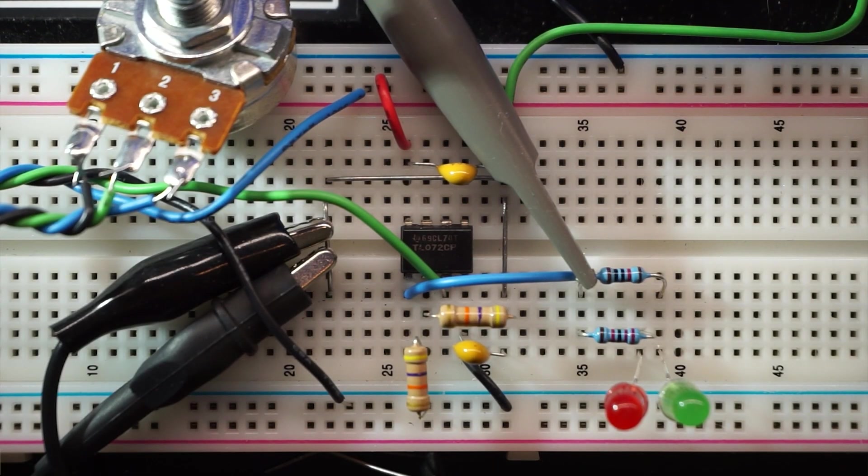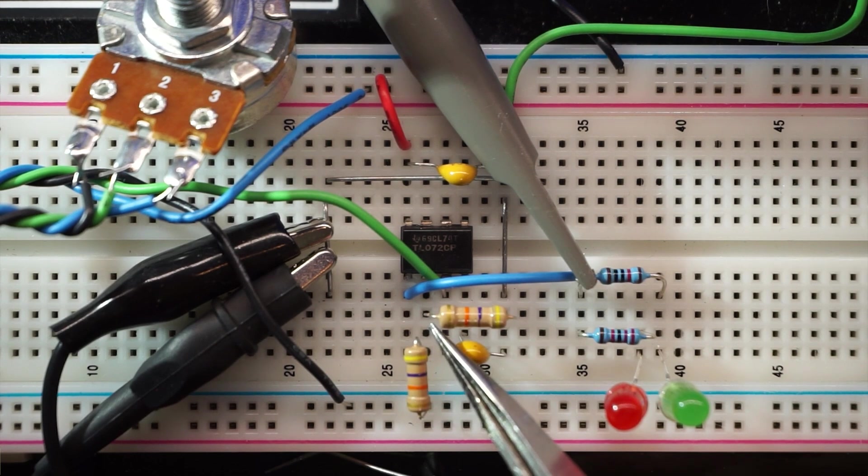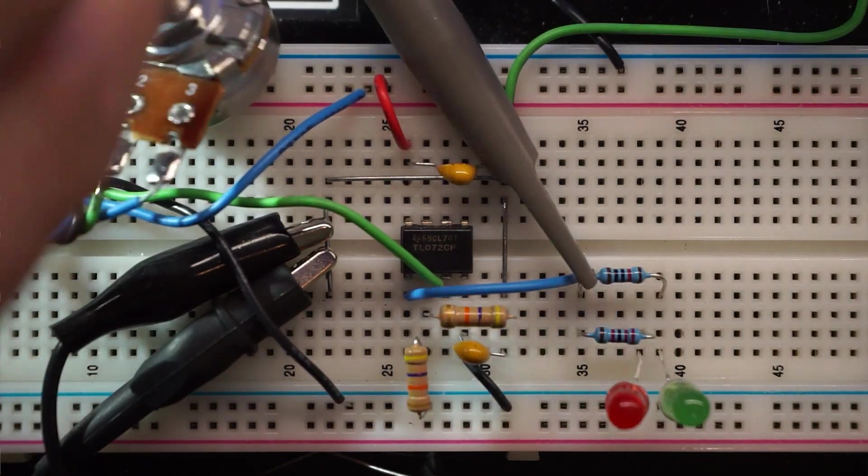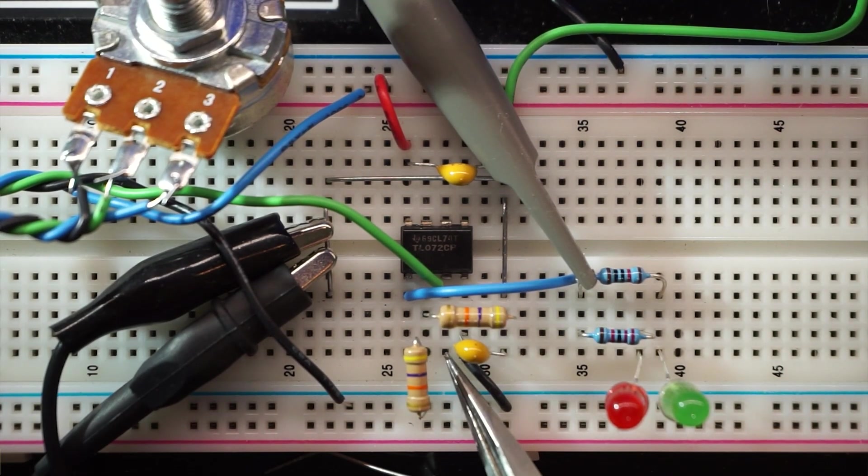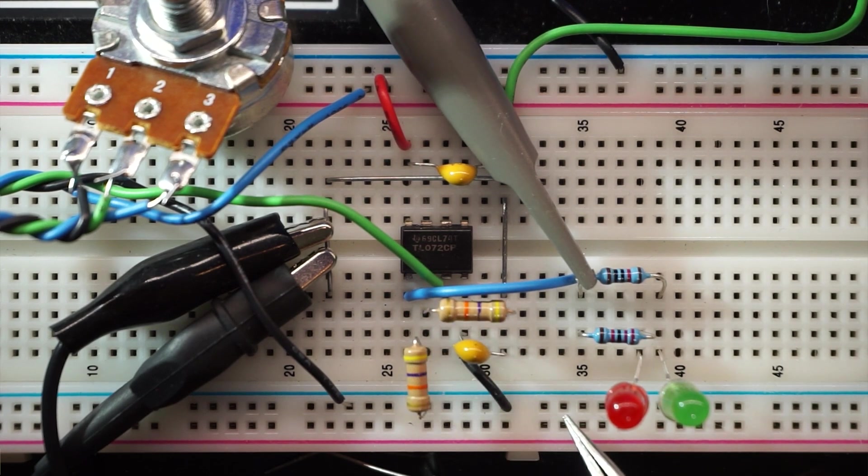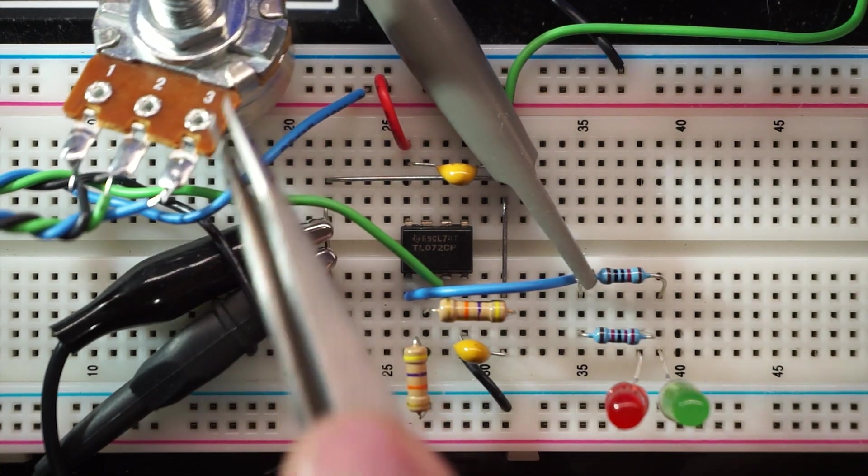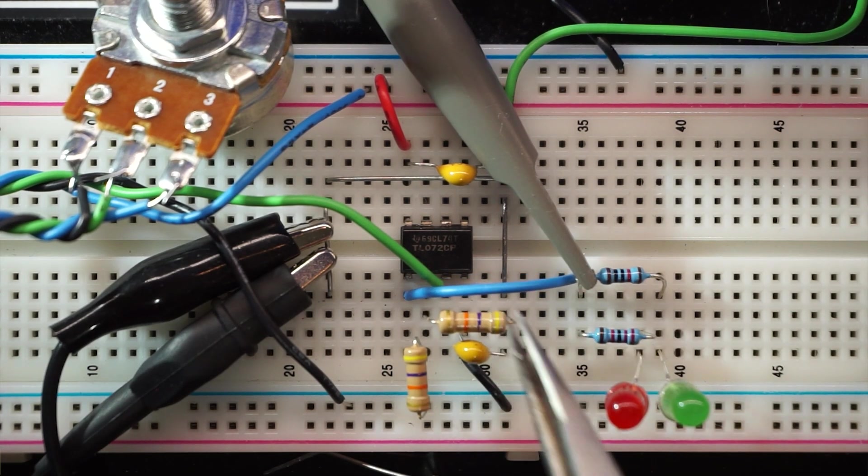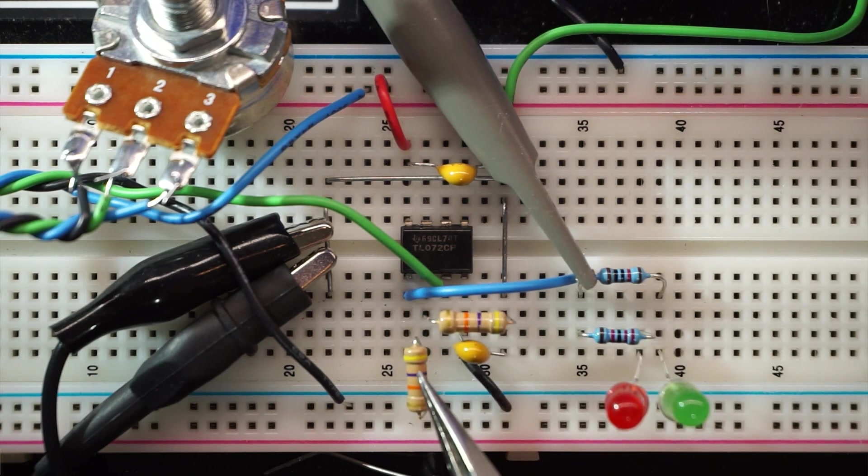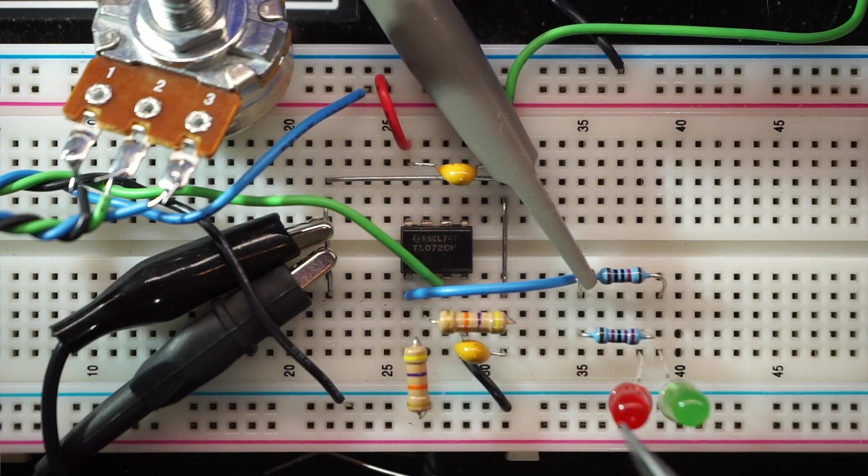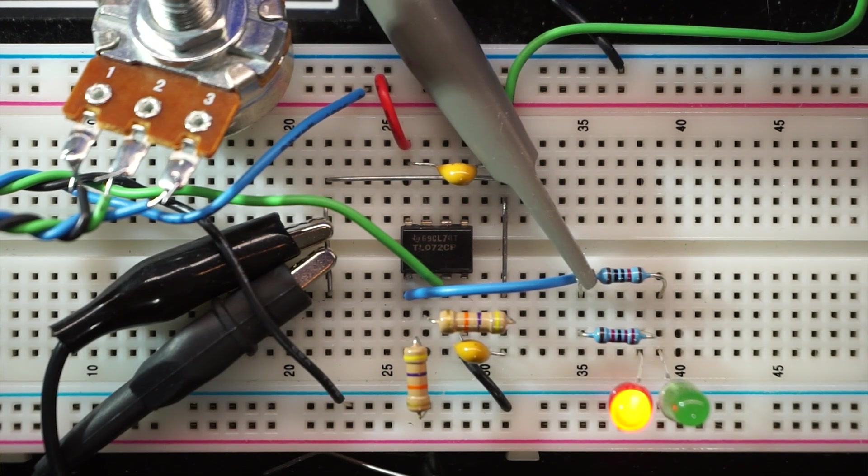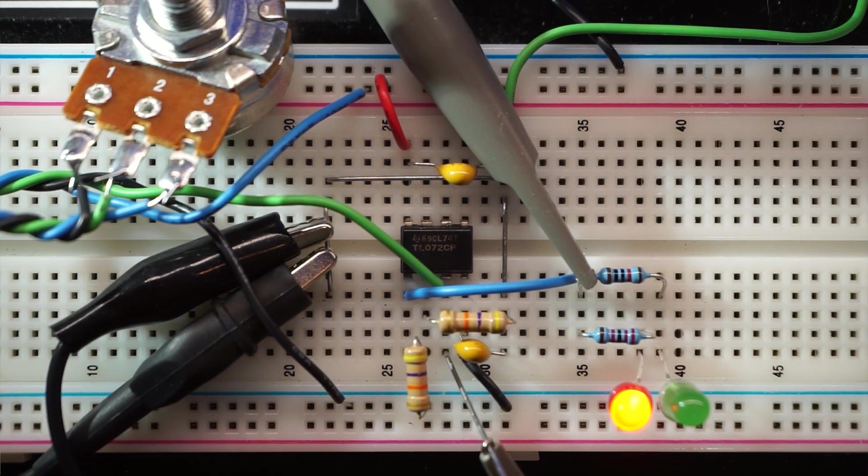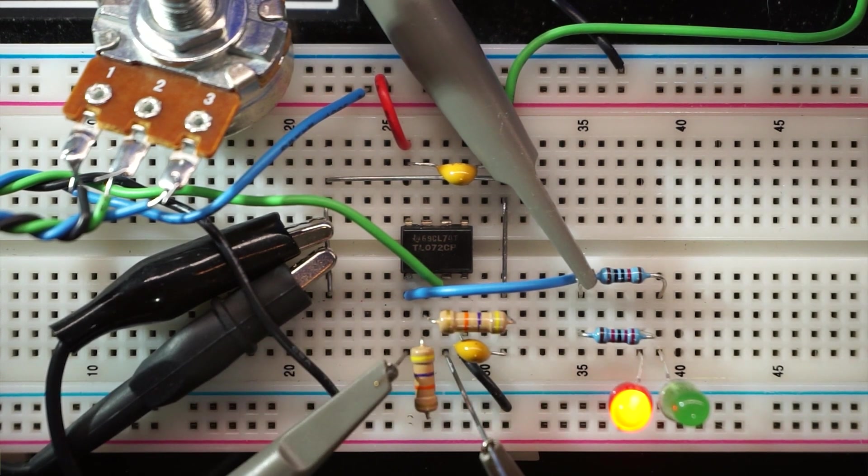This is our comparator circuit. I have a voltage divider as a reference going to the inverting pin, and attached to the non-inverting pin is the center wiper of this potentiometer. As I turn this, I can change the voltage. The op-amp compares that varying voltage against our fixed voltage, which is a couple volts below the negative rail. The output pin is connected to a couple of LEDs - green when above the reference, red when below.